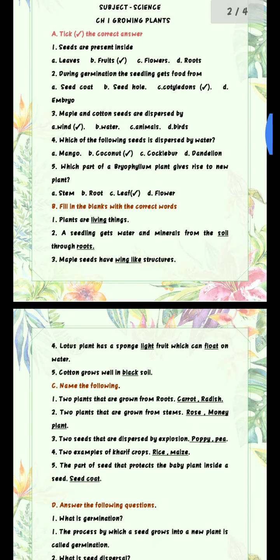Number 2: A seedling gets water and minerals from the blank through blank. Answer is soil and roots — S-O-I-L, roots — R-O-O-T-S. A seedling gets water and minerals from the soil through roots. Number 3: Maple seeds have blank structures. Answer is wing-like — W-I-N-G L-I-K-E. Maple seeds have wing-like structures.